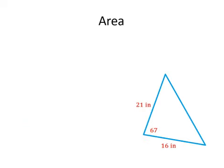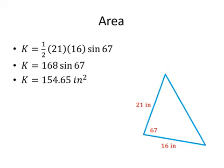Alright, so we have a triangle here: 21 inches, 67 degrees, and 16 inches. Find the area of this. Remember, it's 1/2 times a times c times sine of B. So you should have 1/2 times 21 times 16 times the sine of 67. One half times 21 times 16 is 168, times sine 67, and sine 67 times 168 gives you 154.65 inches squared. So that would be your area for this.